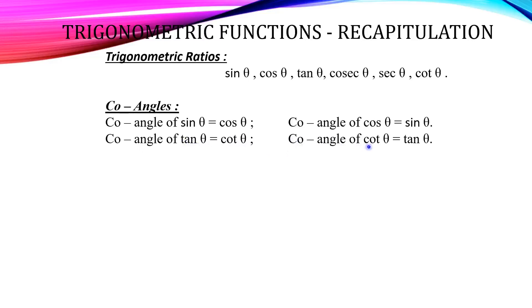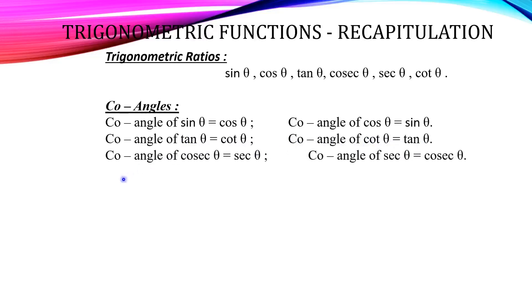The co-angle of cot θ is tan θ. The co-angle of cosecant θ: cosecant's co-angle is secant θ, and secant θ's co-angle is cosecant θ.